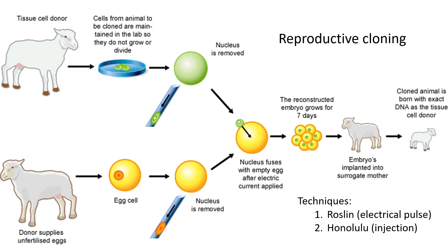For reproductive cloning, you need two different sheep: a donor and a recipient or surrogate mother. From the donor — the one you want to clone — you take some skin cells, or somatic cells. The nucleus, which contains the DNA, is removed from this cell. It is the diploid DNA from this organism that we want, because we want all of this DNA to be in the next offspring. So we remove the diploid nucleus from the donor sheep.